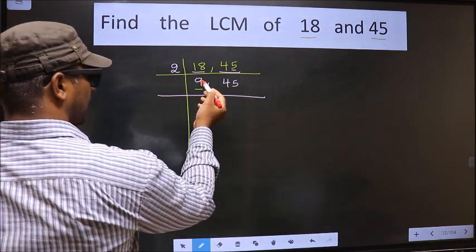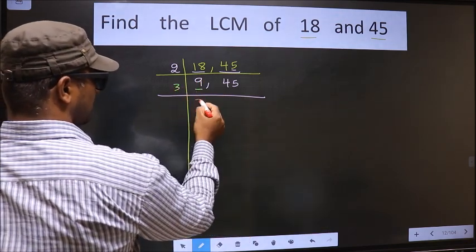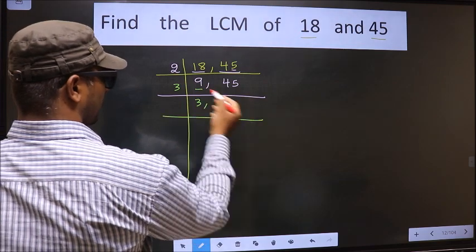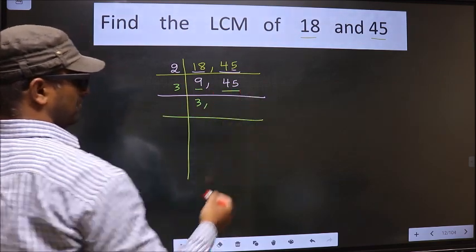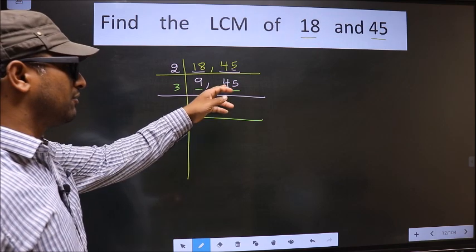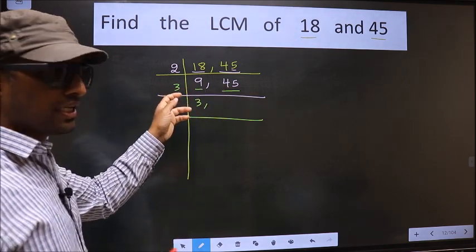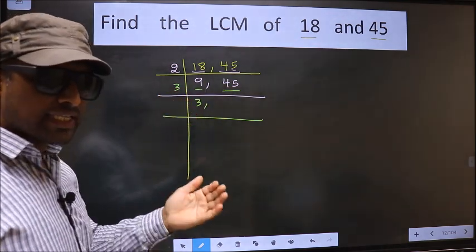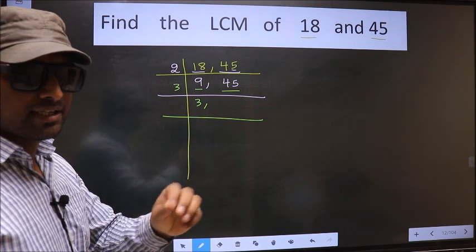Now here we have 9. 9 is 3 × 3 = 9. The other number 45. Now to check whether 45 is divisible by 3 or not, to check that we should add the digits.